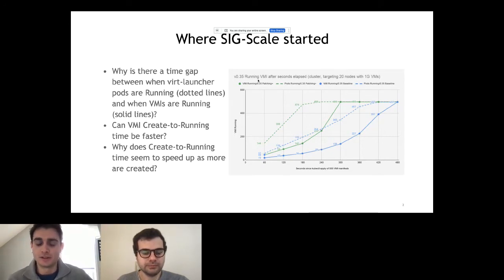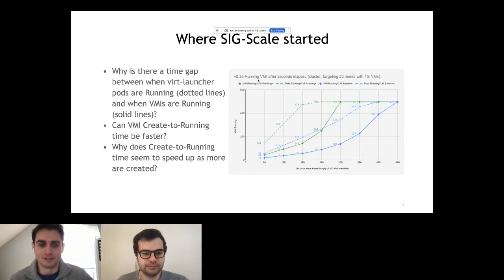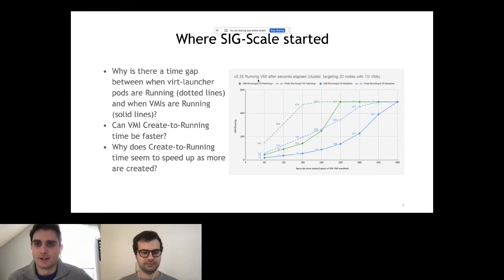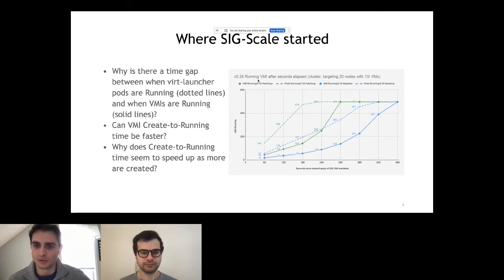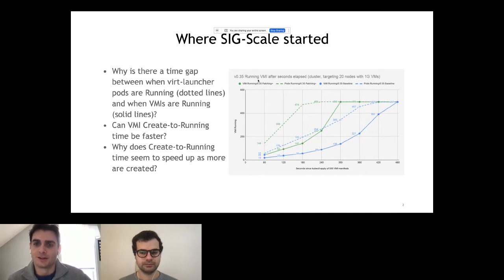We took the data we got from this tool, plugged it into an Excel spreadsheet, made some graphs, and this is a picture of one of the first graphs we created. What's pictured here is the create-to-running time of VMIs, split between pods and VMIs. The virt-launcher pod is the dotted line and the solid line is the VMI. We measured when a virt-launcher pod would go to running and when the VMI would go to running, and we saw that there was a gap between them.